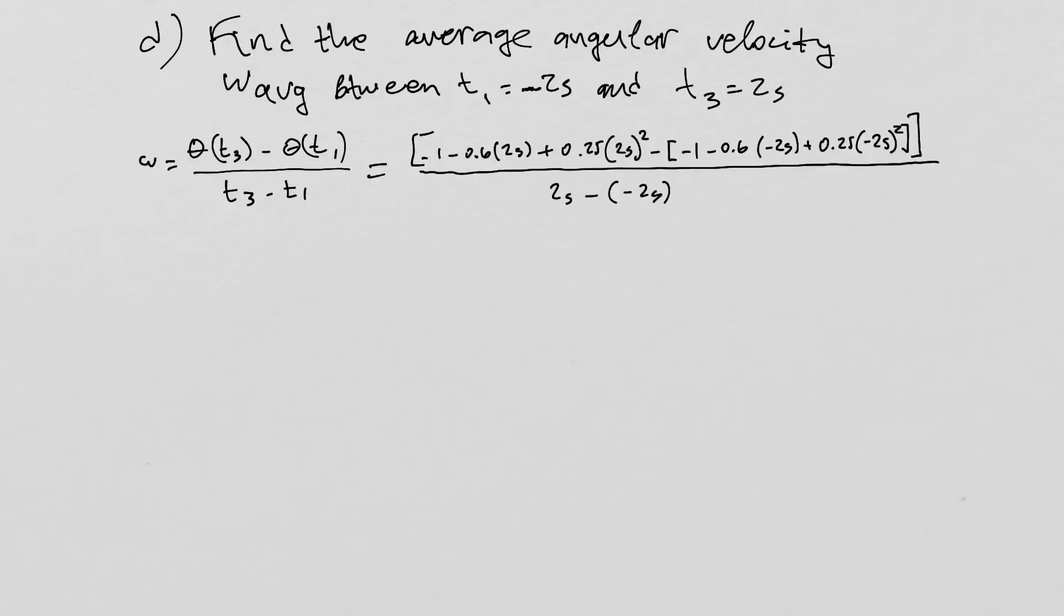Next, let's find the average angular velocity between -2 seconds and 2 seconds. The average angular velocity is defined as the difference between two angular positions divided by the time at those two positions. Substituting the two times into the expression for the position function and subtracting leads us to a pretty long expression. However, when you do the math, you end up with -0.4 radians per second.